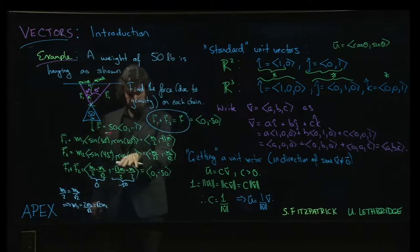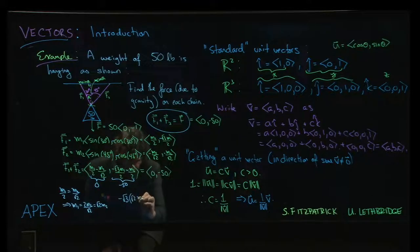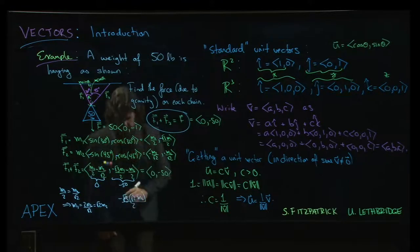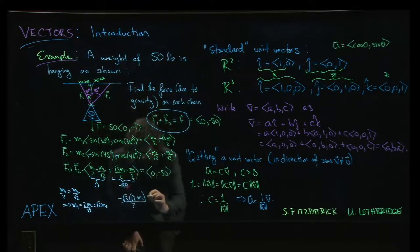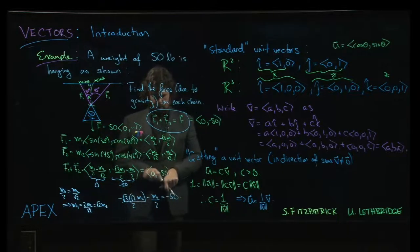so now I can plug that into the next equation. So I get minus root 3 times M1, but M1 is actually root 2 times M2 over 2, okay? Minus M2 over 2, and that's supposed to equal negative 50. All right.